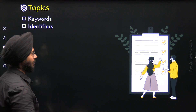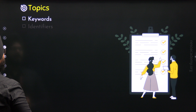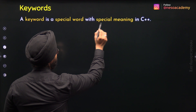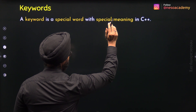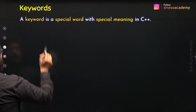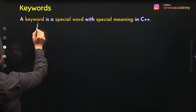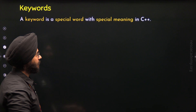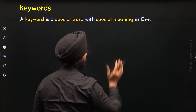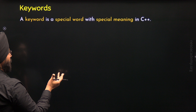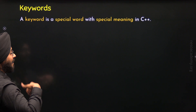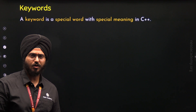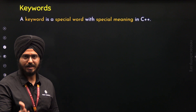Let's get started with the first topic, that is Keywords. A keyword is a special word with special meaning in C++. As the name suggests, it is a word which plays some key role in C++. By special meaning, I mean that a keyword plays an important role in C++. We cannot use it randomly in our code or we cannot use it in place of an Identifier.